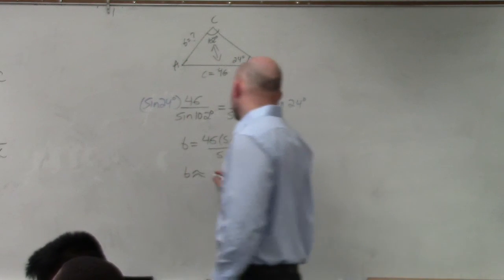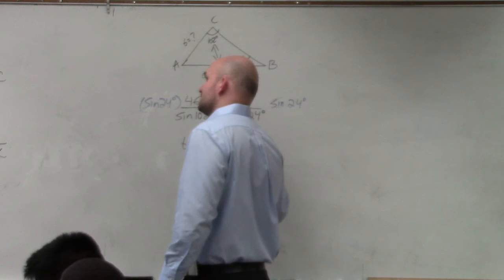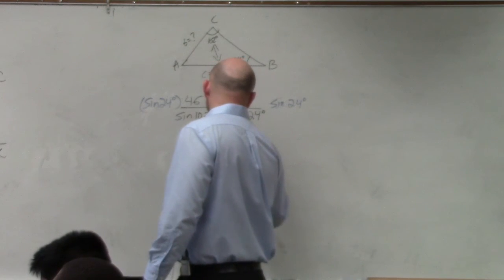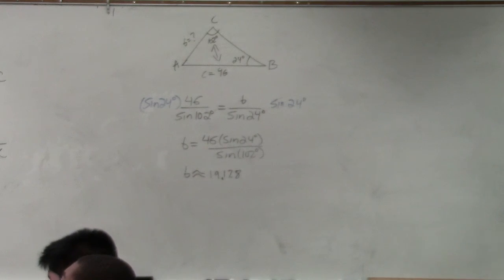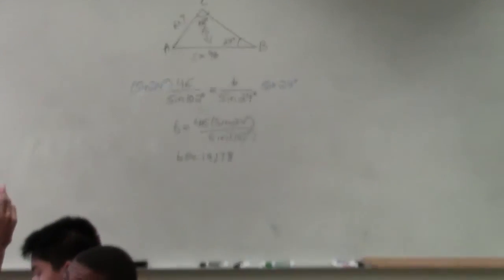So by approximating my answer, I'm going to have 19.128, because I'm going to round to the nearest thousandth, unless otherwise told. Does everybody see how I typed that in my calculator?